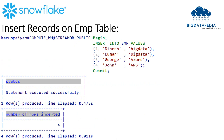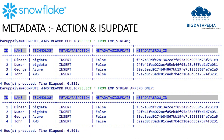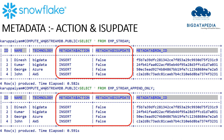Let me insert some records into the EMP table and see how they are reflected in the stream objects. When we retrieve data from EMP_stream, metadata action shows as 'insert' for everything because we just inserted new records. The next column, metadata is_update, shows as false for everything — it will only reflect as true if an update happens. The same is shown in the append-only stream object since it follows only insertion data.